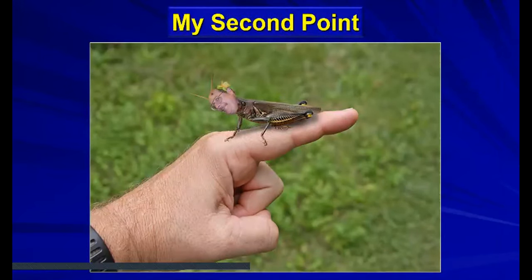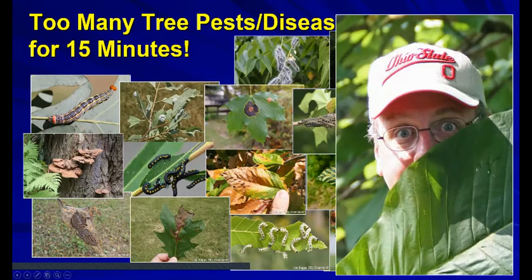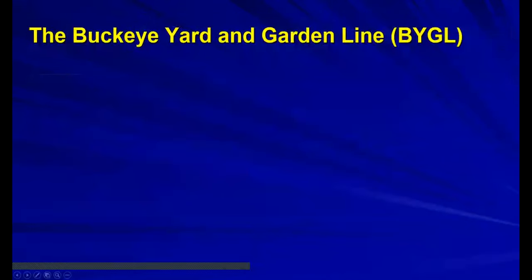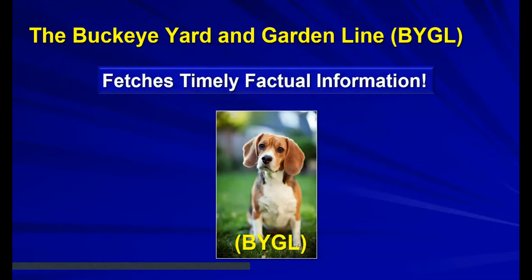There are too many pests and diseases to get through in 15 minutes, but I'm going to cover some major ones. What I have at my disposal is something that could serve as a handout - the Buckeye Yard and Garden Line, which we affectionately call the BYGL. It fetches timely, factual information. I'll be highlighting a few things from the BYGL in terms of talking about pests and diseases.